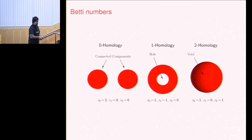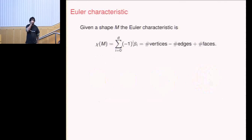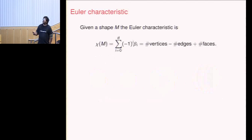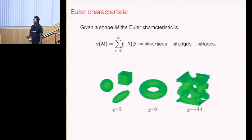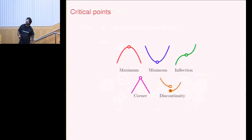One idea uses Betti numbers: Betti zero is the number of connected components, Betti one is the number of holes, Betti two is the number of voids. Another summary is the Euler characteristic — the alternating sum of Betti numbers, or for a 3D mesh: vertices minus edges plus faces. This is a topological invariant: it's always two for any solid object, always negative for Swiss cheese depending on holes. We'll use a version of this summary.